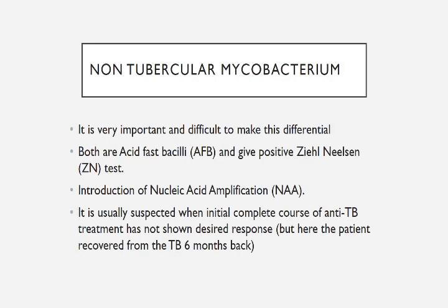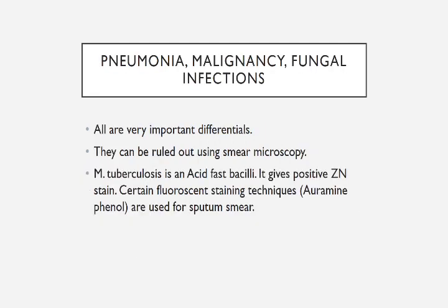Non-tubercular mycobacterium: It is very important to make this differential because Mycobacterium tuberculosis and non-tubercular mycobacterium have different lines of treatment, and it is very difficult to differentiate them because they cannot be differentiated on the basis of smear microscopy — both are acid-fast bacilli and give a positive Ziehl-Neelsen stain test. We therefore use nucleic acid amplification for differentiation. NTM is usually suspected when the initial course of anti-TB treatment has not shown the desired response. In this case, however, the patient had recovered from TB six months back. Pneumonia, malignancy, and fungal infections are important differentials but can be ruled out using smear microscopy, as Mycobacterium tuberculosis is an acid-fast bacillus giving a positive ZN stain.